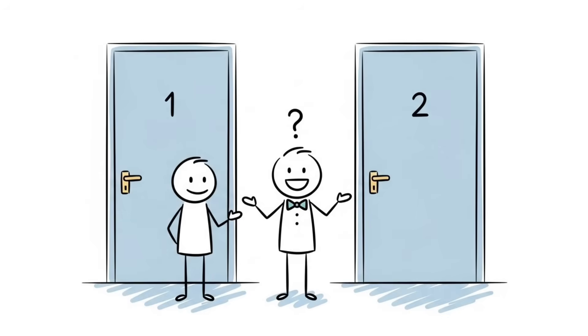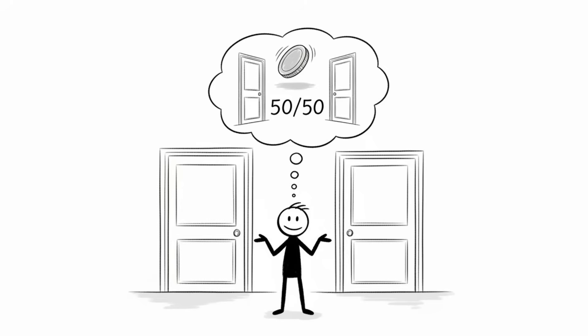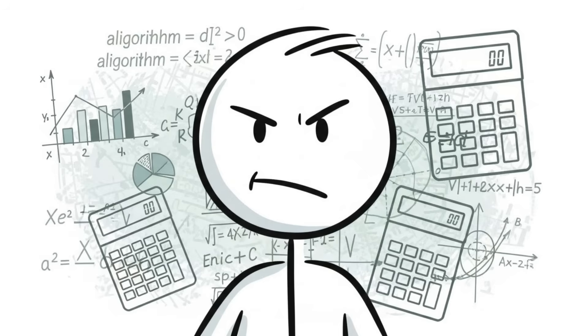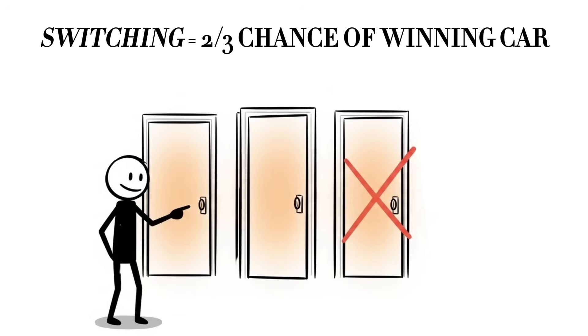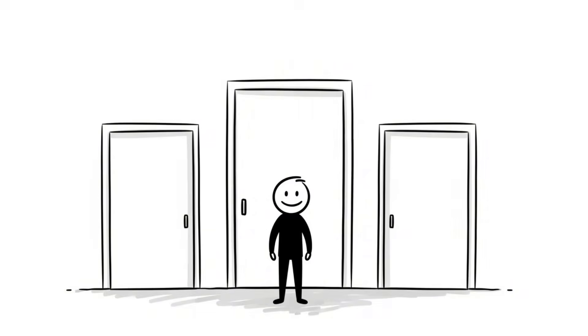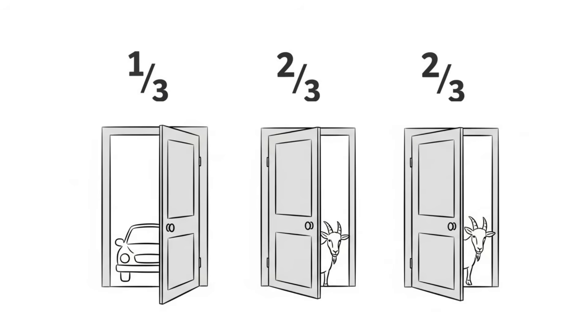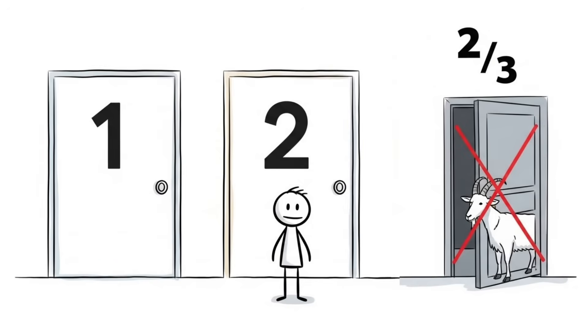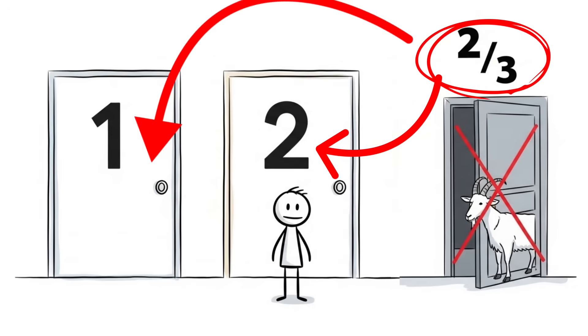Most people's intuition says it doesn't matter. 50-50 odds either way. Mathematics says you're wrong. Switching gives you a two-thirds chance of winning the car. Staying gives you only one-third. When you made your initial choice, you had a one-in-three shot at picking the car and a two-in-three shot at picking a goat. The host revealing a goat doesn't change your initial probability. It concentrates the remaining probability onto the other unopened door.